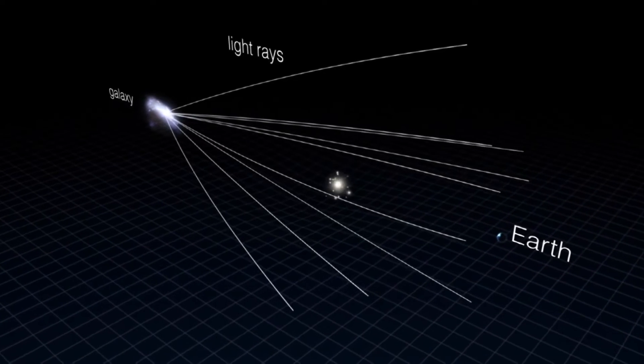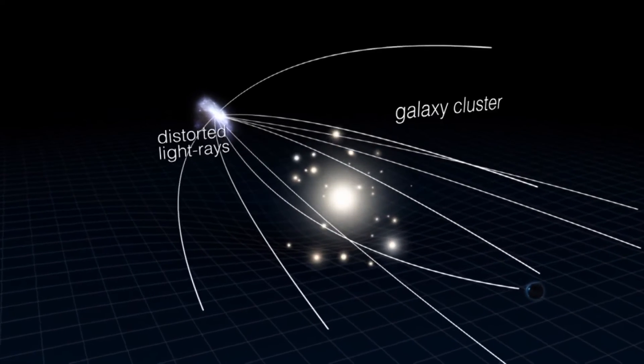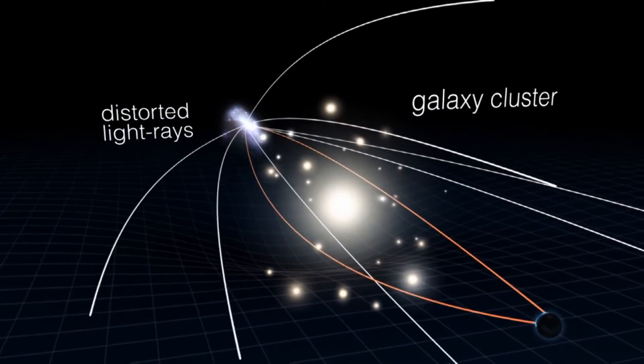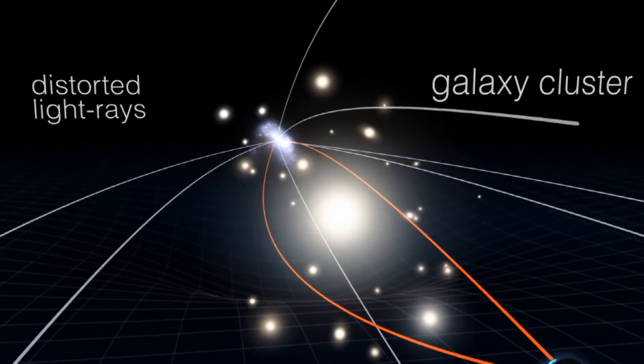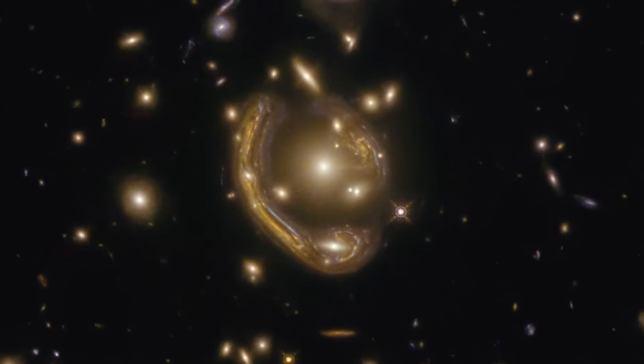A huge amount of matter, like a cluster of galaxies, creates a gravitational field that distorts and magnifies the light from distant galaxies that are behind it, but in the same line of sight. The effect is like looking through a giant magnifying glass.